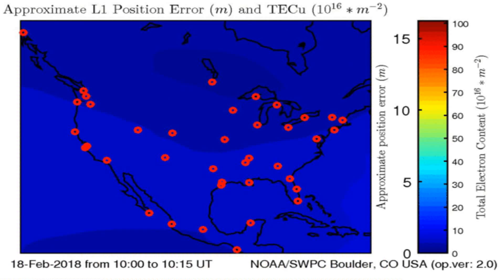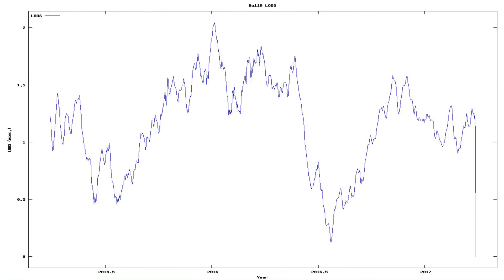And here we see the total electron content above the Earth. Anomalies in total electron content have sometimes preceded earthquakes below that area on Earth.